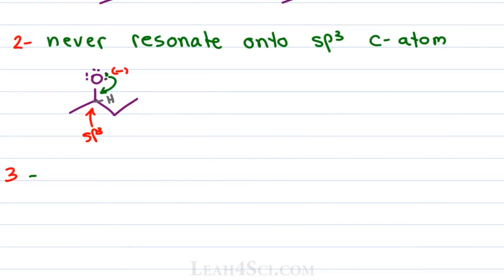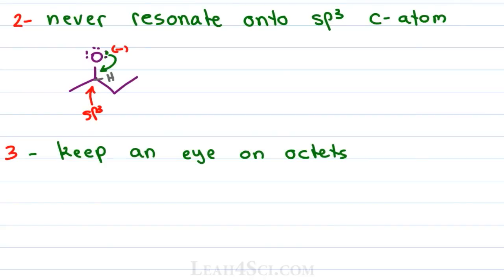Rule number three is a continuation of rule number two, but carbon needs its own special reminder: just keep an eye on your octets. If the atom in question already has a complete octet, then ask yourself — by adding electrons to this atom, am I violating the octet? Can I kick anything out, or is this atom allowed to have more than eight electrons?